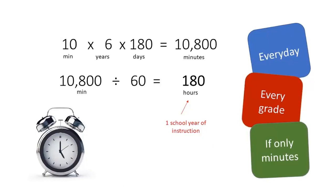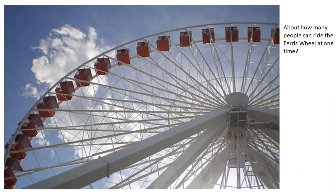I want to share two number sense routines before we pivot to problem solving and language acquisition. The first is an adult version — keep in mind this is not a third-grade example. This is a think-pair-share type of protocol. Here's the prompt: how many people do you think could ride that Ferris wheel at one time? I'll give you a few moments to look at that and think about it.